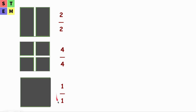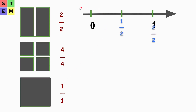It equals one and it is written that way as a fraction. Now, how can we mark these on the number line? In our first example I've got a number line from zero to one, divided into two equal parts. If it's half of it, it's one half; if it's two halves, that equals one.